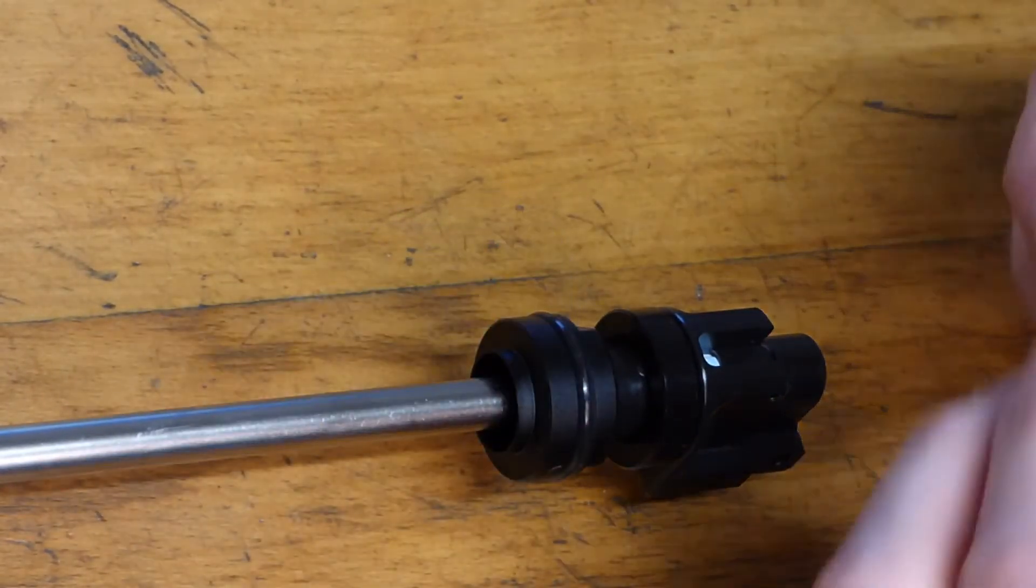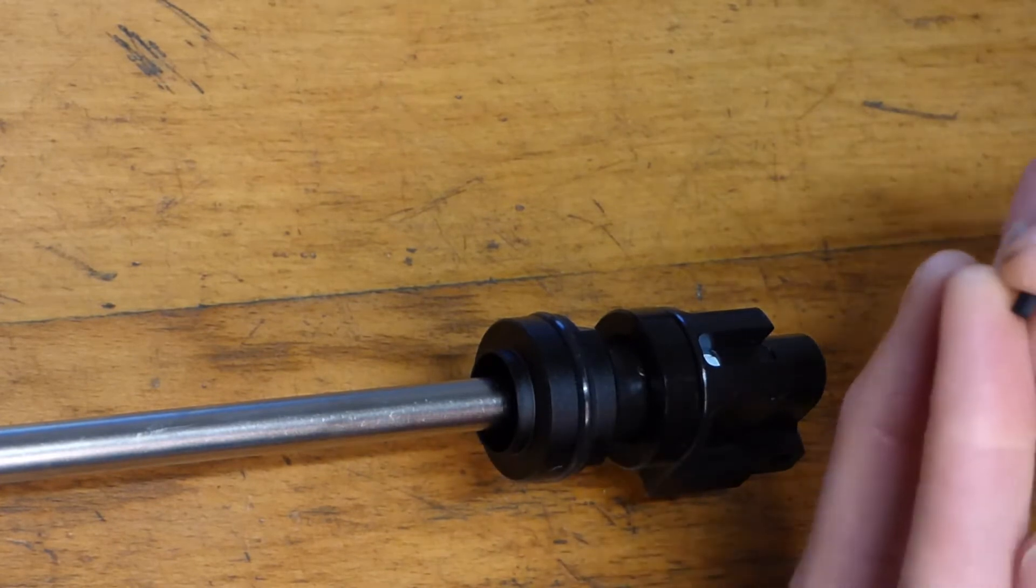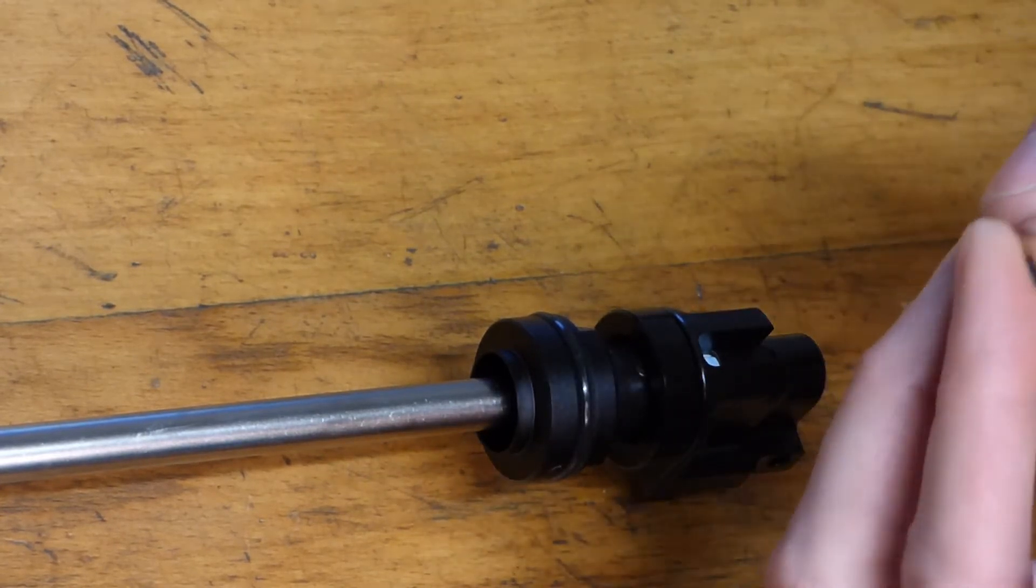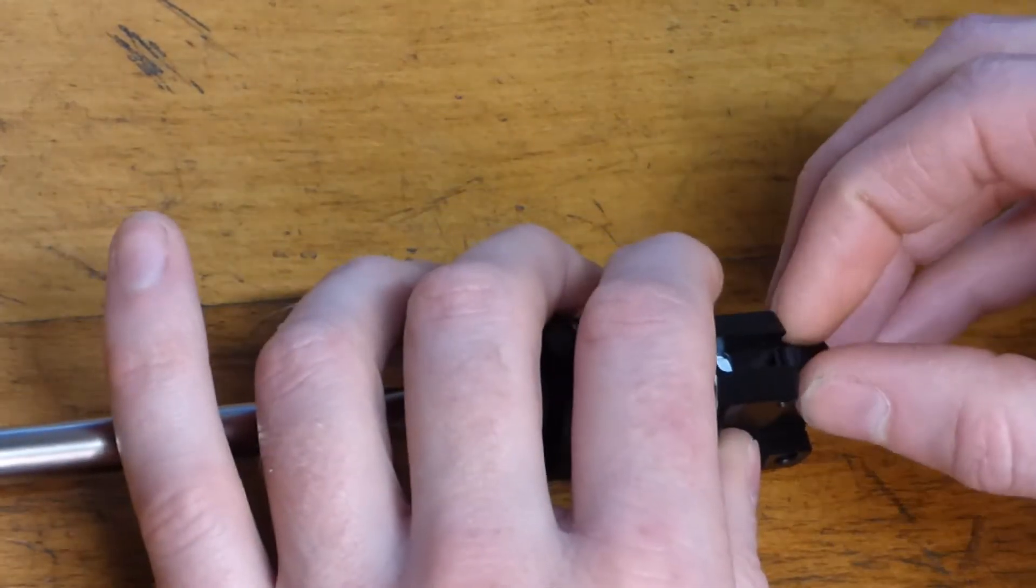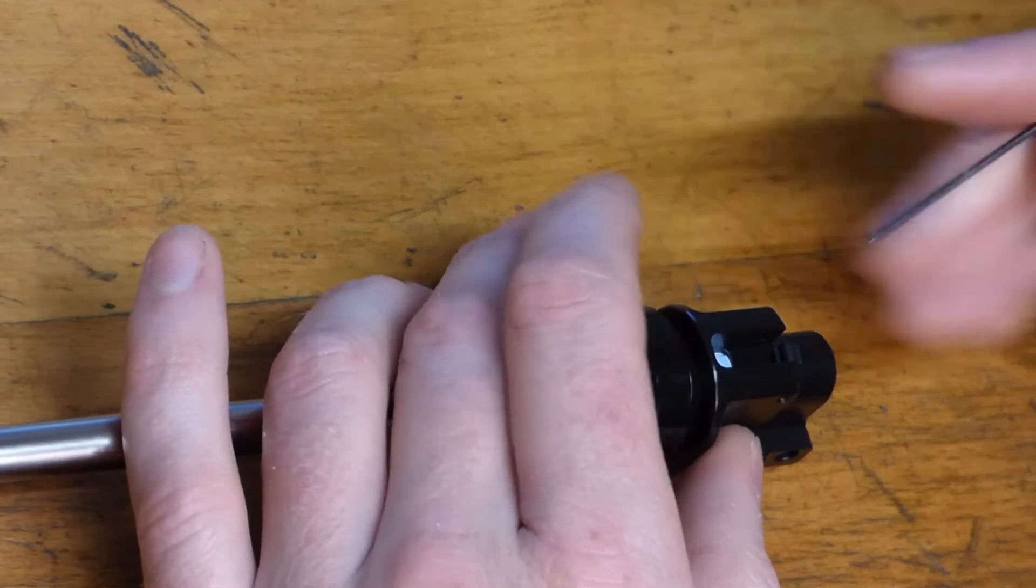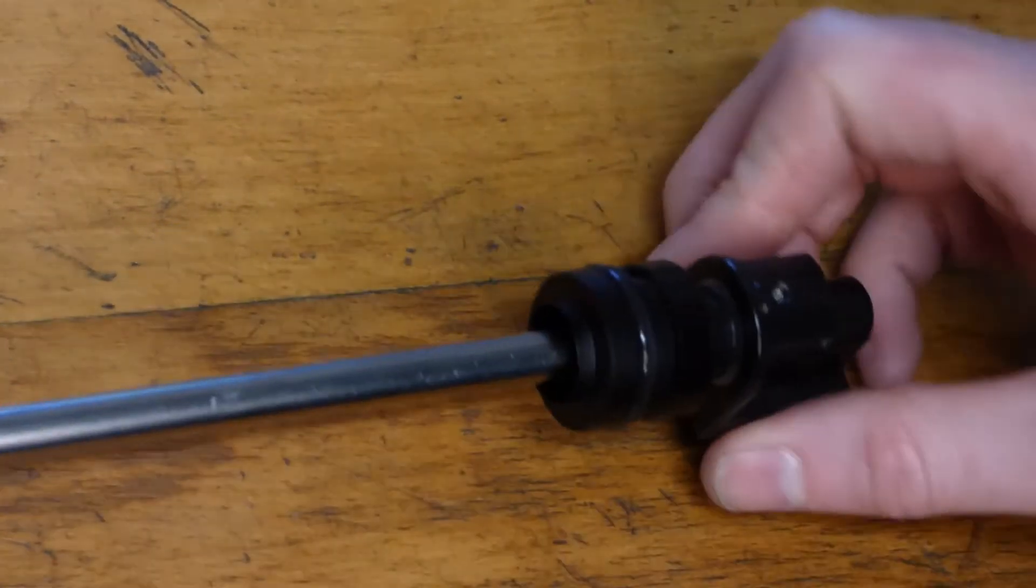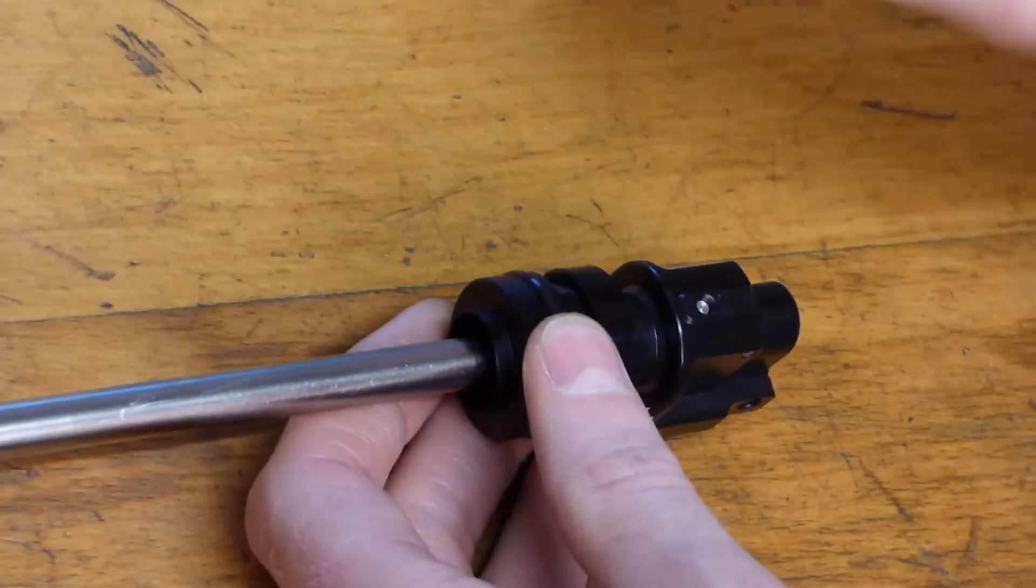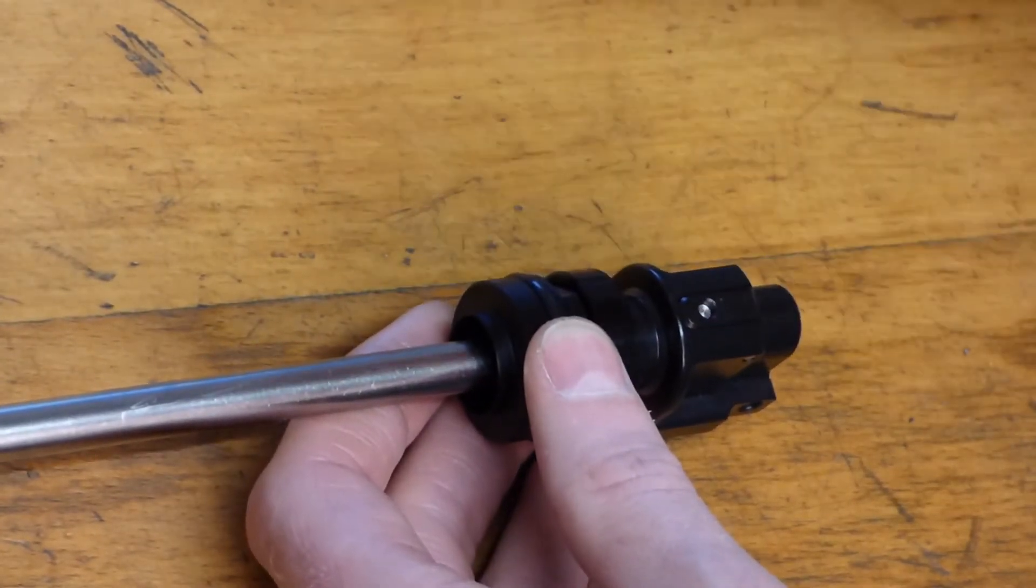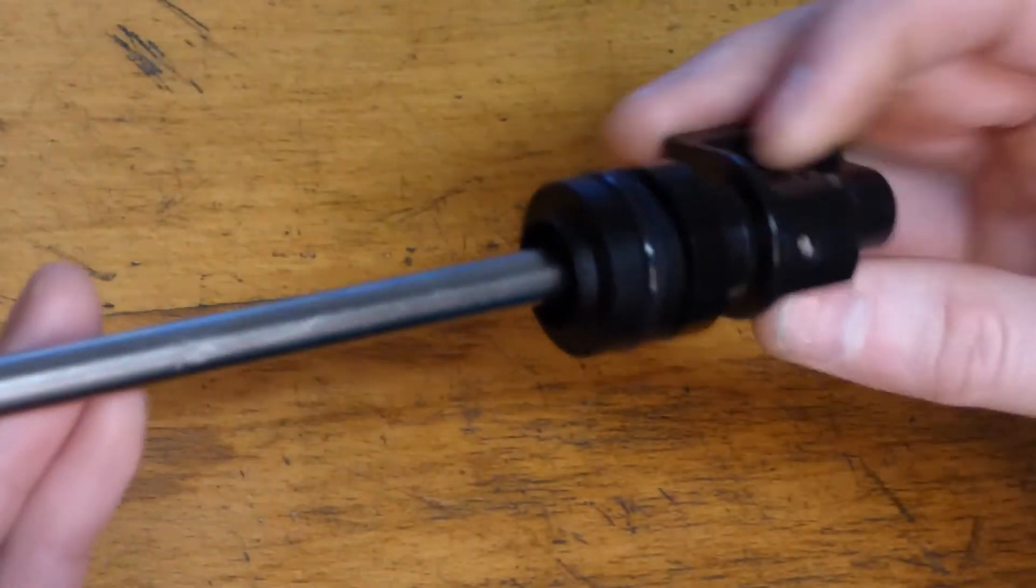All we need to do now is put the nub. This is the supplied nub with the hop chamber, which is ideal because it's a concave one. So that is perfect. Just push that into position. Now that will work with the top-down adjuster that's already on the gun, so that's absolutely ideal. So that is the barrel assembly all complete.